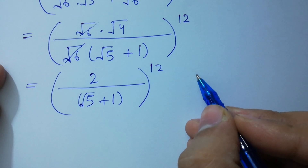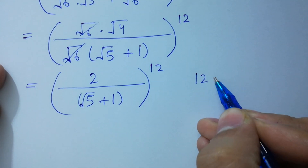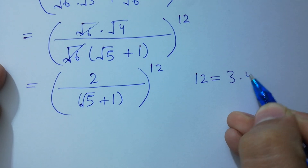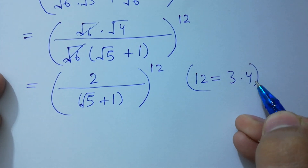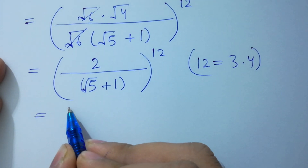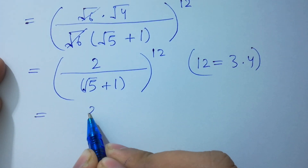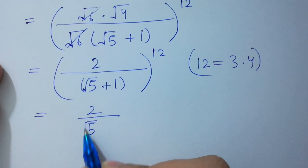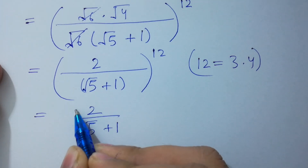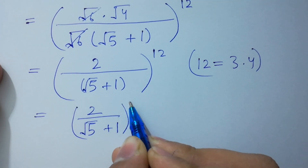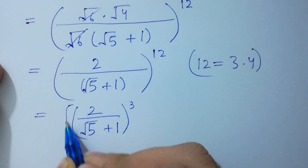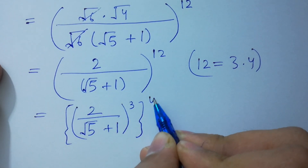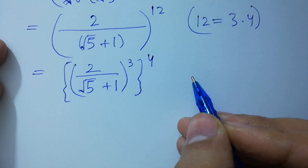Since 12 equals 3 times 4, it will be equal to 2 over (square root of 5 plus 1) to the whole power 3, and that whole thing to the power 4.